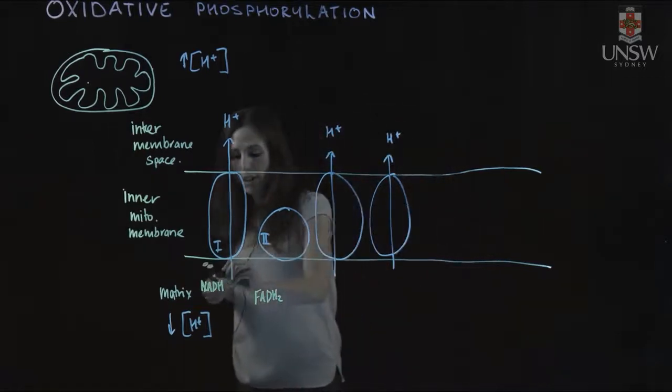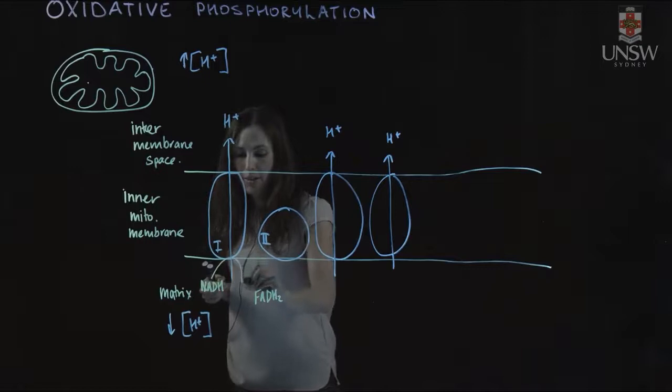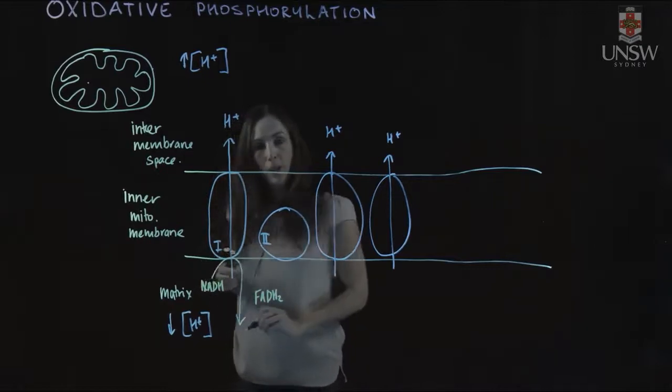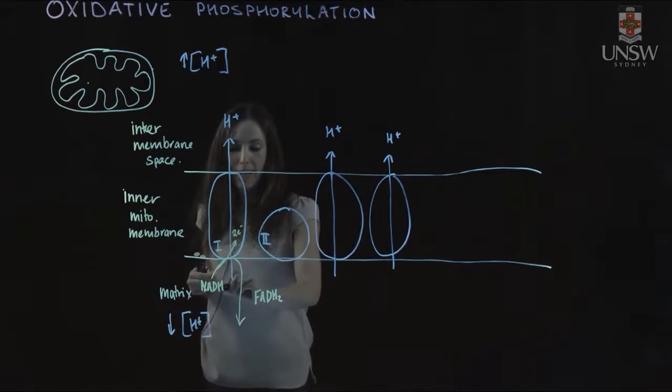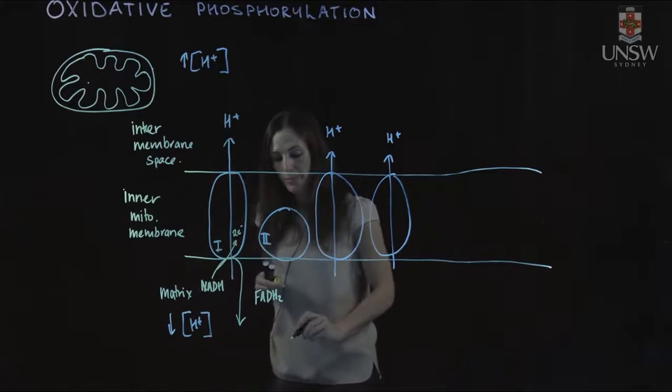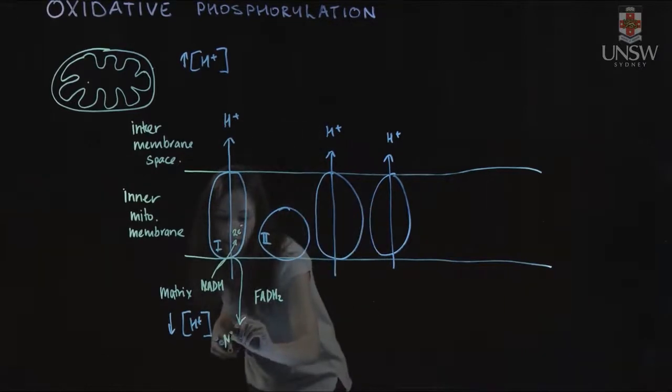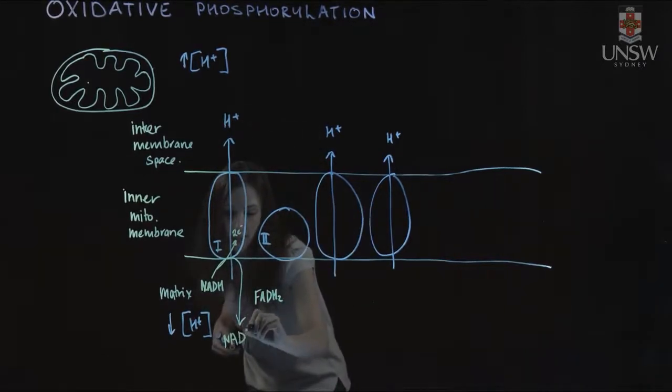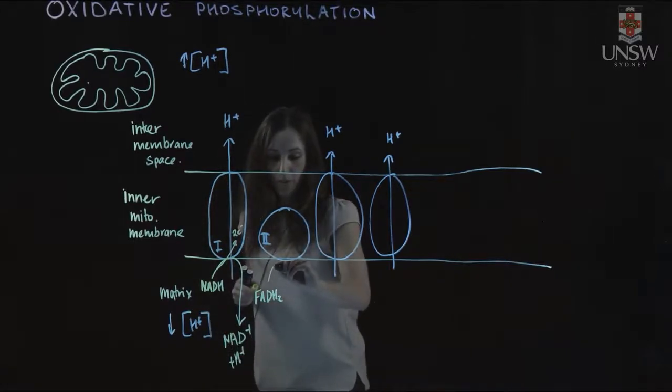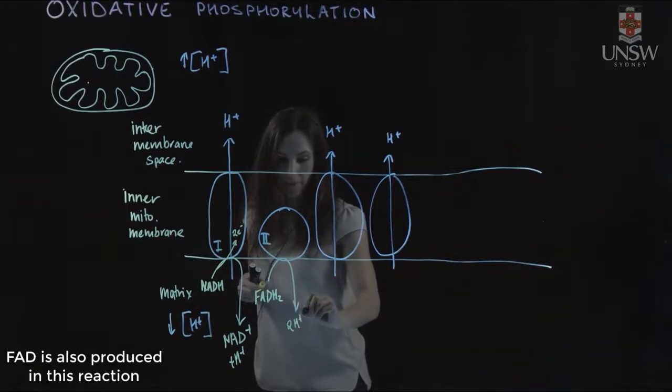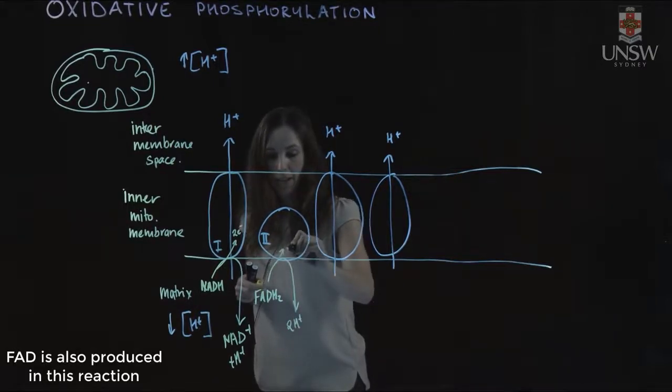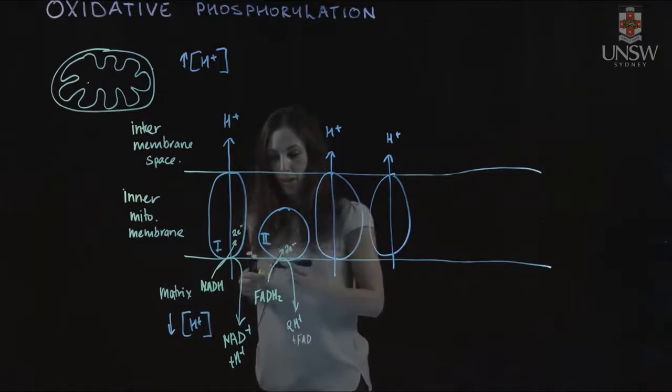These molecules have a pair of electrons and are re-oxidized. The electrons are passed from NADH to Complex I, and from FADH2 to Complex II, with pairs of electrons being transferred across.